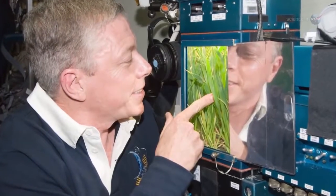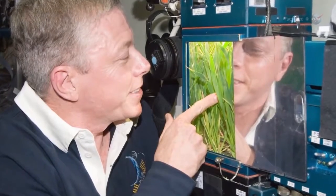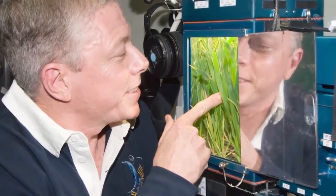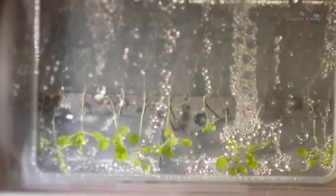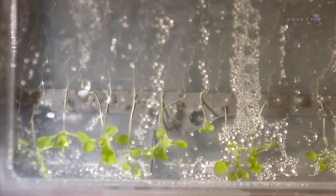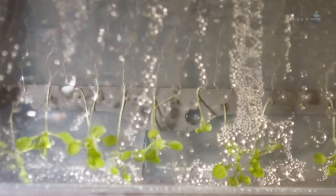Paul and Furl also observed how Arabidopsis used light as a gravity substitute for telling up from down. With lamps shining overhead, roots grew clearly away from the leaves, just like on Earth.